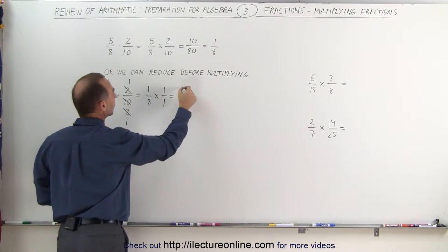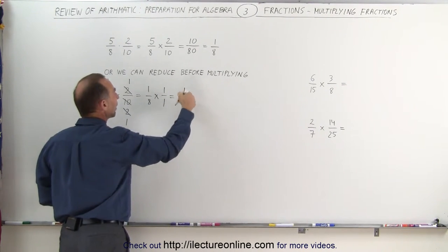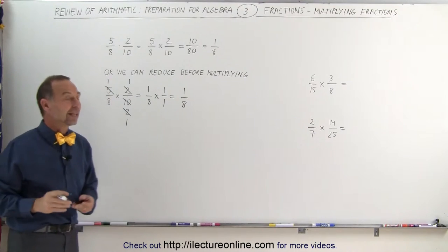Now we multiply the numerators together we get 1. Multiply the denominators together we get 8. And the answer again of course is 1 eighth. If we did it correctly we should get the same answer.